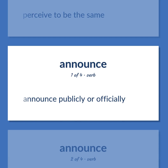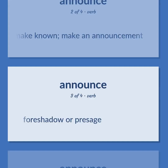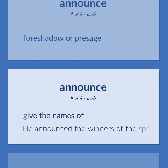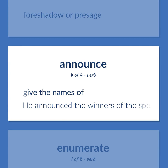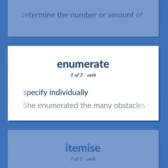Announce / Enumerate: Announce publicly or officially. Make known; make an announcement. Foreshadow or presage. Give the names of — 'He announced the winners of the spelling bee.' Determine the number or amount of. Specify individually — 'She enumerated the many obstacles she had encountered.'